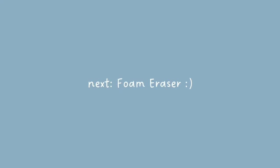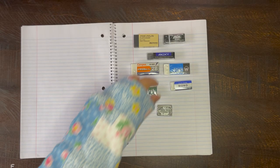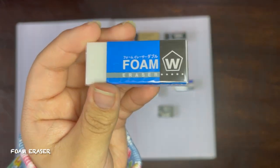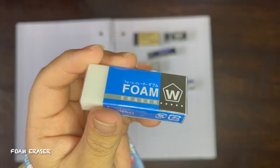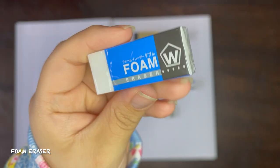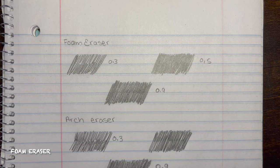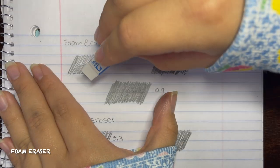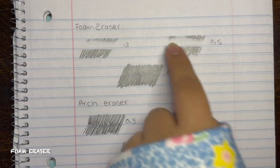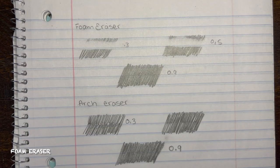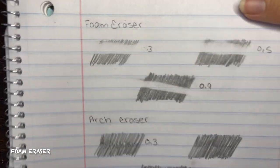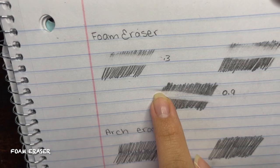This next one is a Sakura foam eraser in W80. It is said to remove pencil markings with a light effortless touch. And also the eraser shavings clump up together according to the description. So when I tried to erase the 0.3 it did a good job. On the 0.5 there was a little bit of graphite left but not too big of a problem. And when I erased the 0.9 it left a little bit of streaks. But it didn't do that bad of a job.